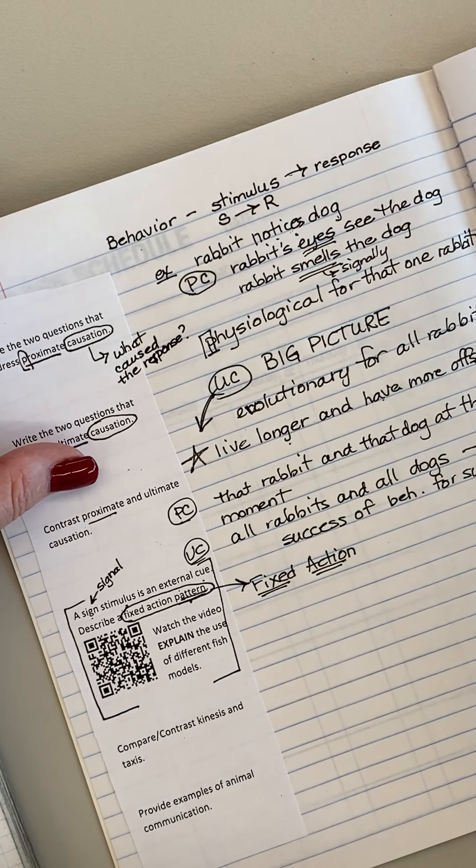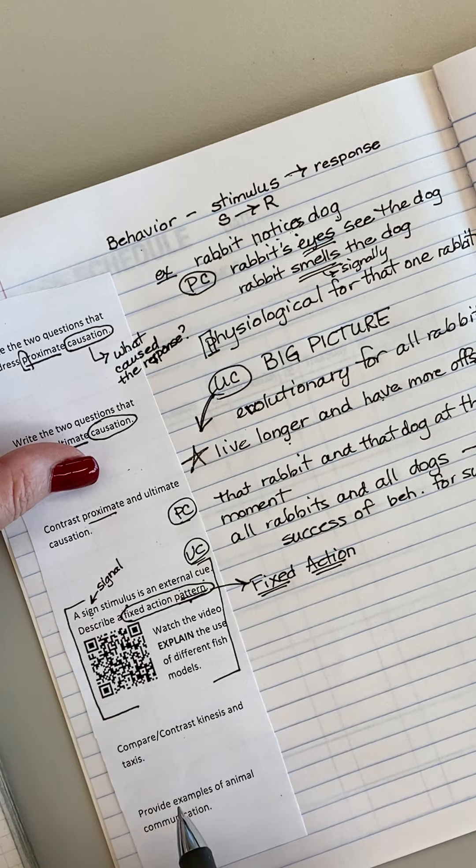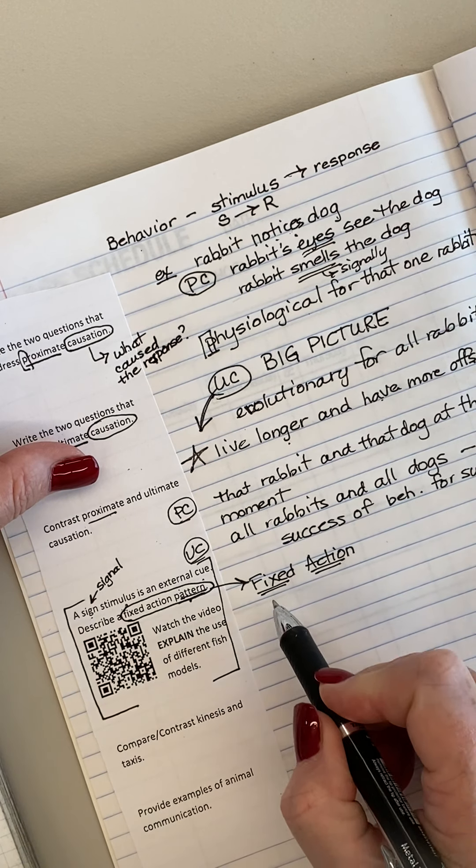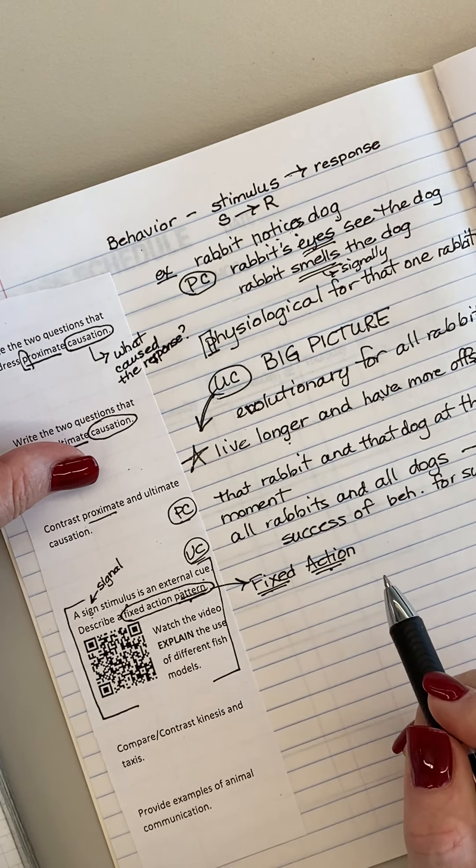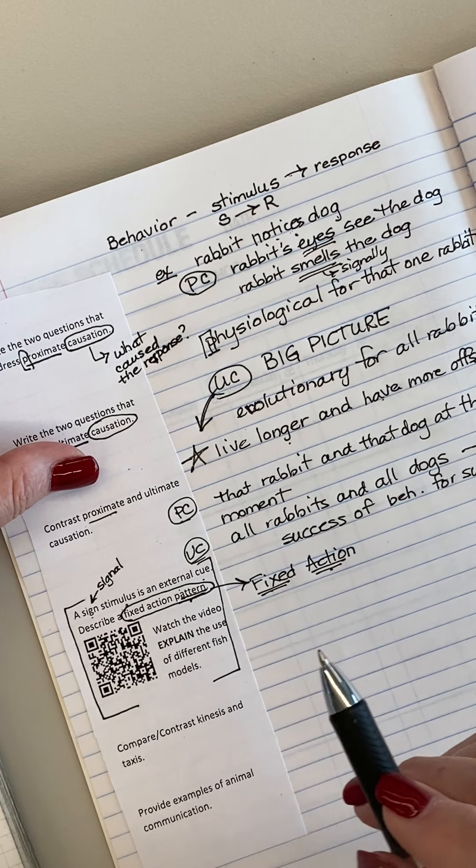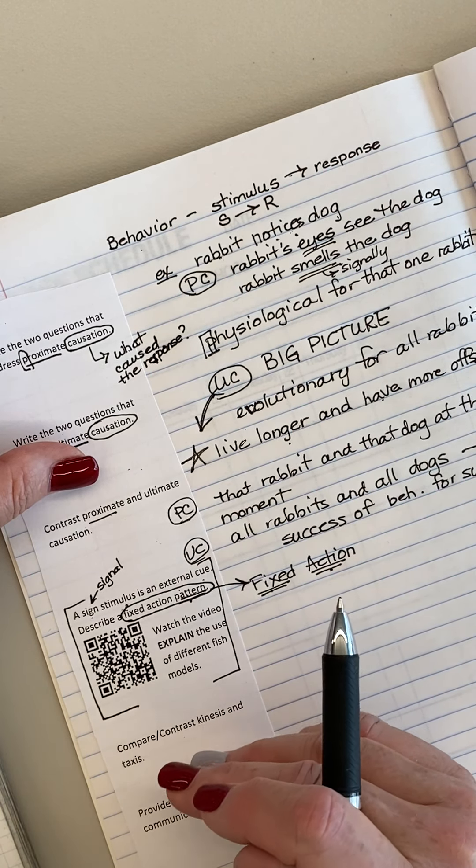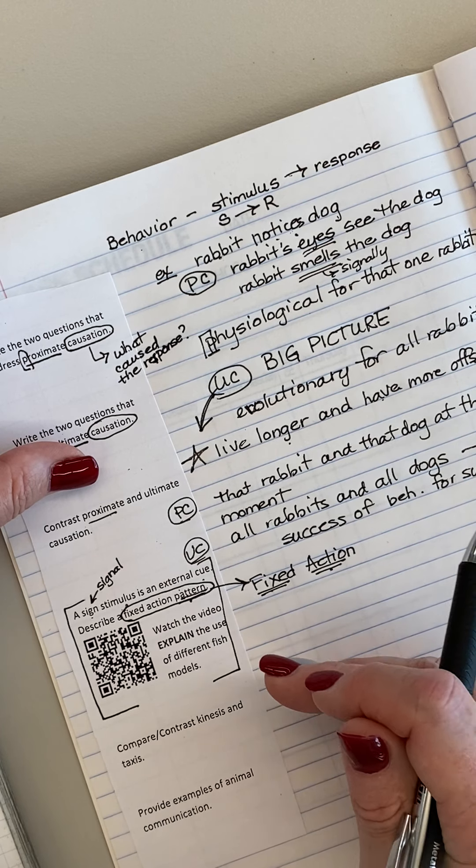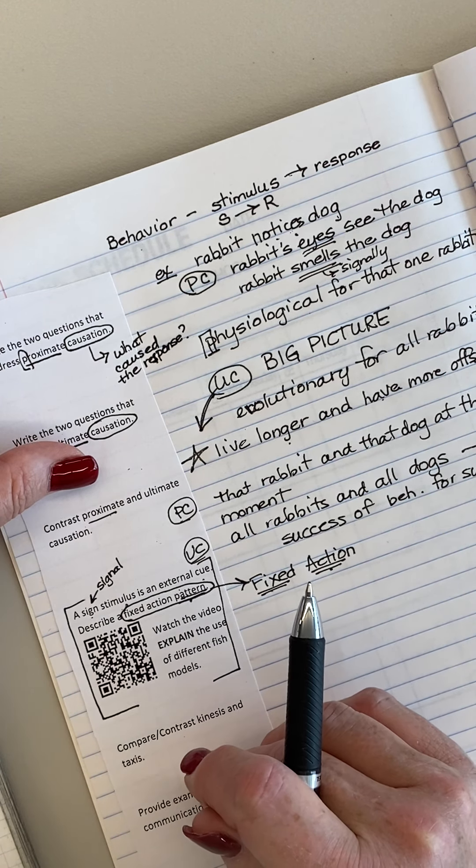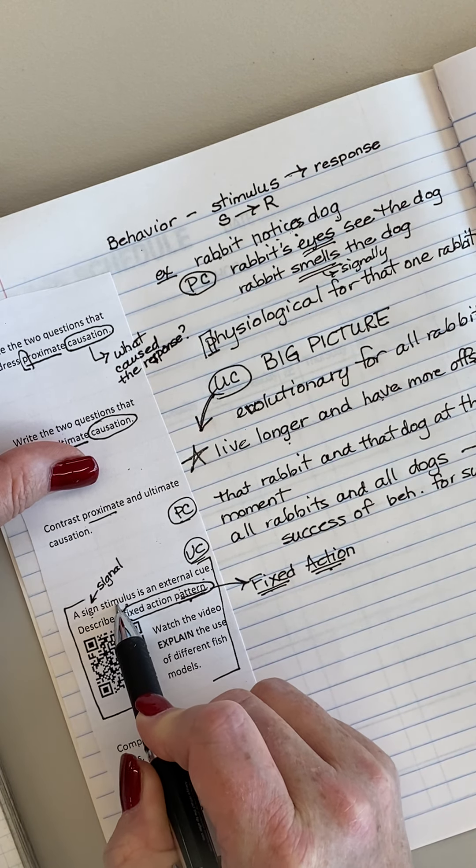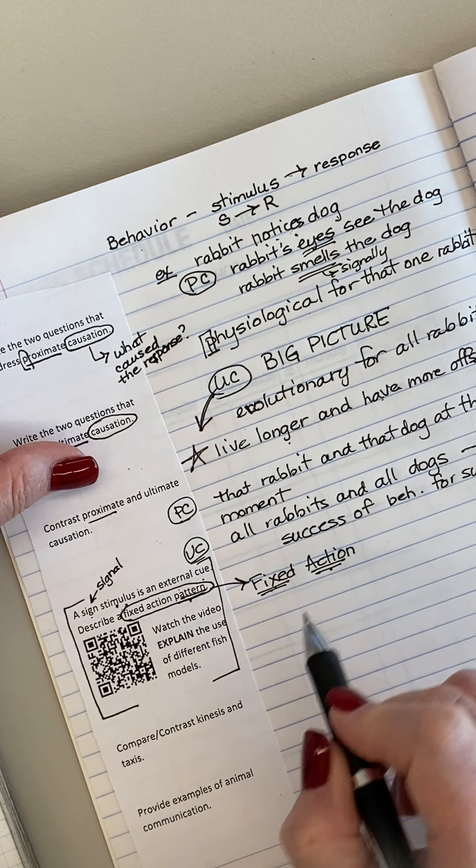And so as it rolls out of the nest, you're going to have the response of taking your wing and scooping that egg back into the nest. That can't be stopped. It's a fixed action as soon as that bird perceives the egg moving out of the nest. So what people did, they would take the egg and start to let it go out of the nest. So the bird perceived, oh, that egg is rolling out of the nest.